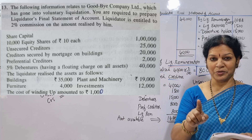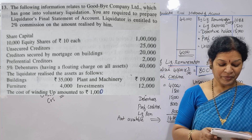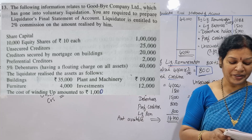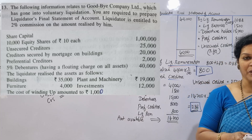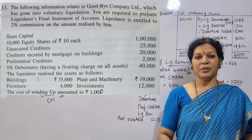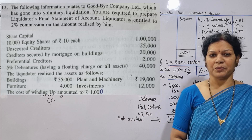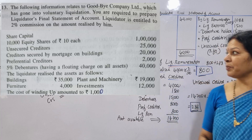Point to be noted: the cost of winding up is 1,000 rupees. Liquidation expenses are 1,000 rupees. This is the problem.